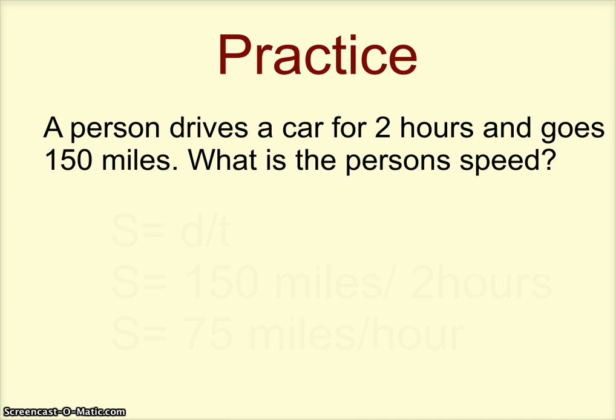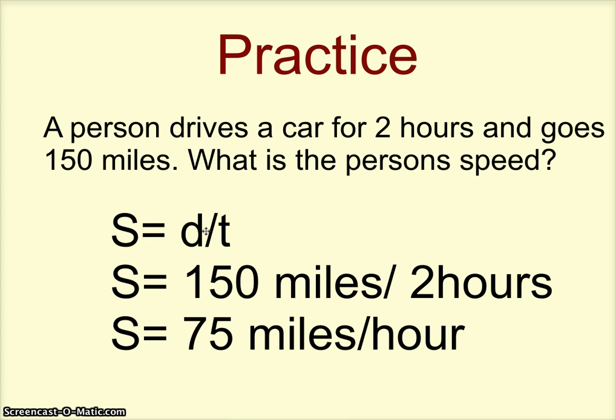Let's practice. A person drives a car for two hours and goes 150 miles. What is the person's speed? Well first we'll want to write down the formula: speed is distance over time. Then we plug in what we're given. We are given the fact that this person went 150 miles, that's our distance. And they drove for two hours, that's our time. 150 divided by 2 gives us the speed of 75 miles per hour.